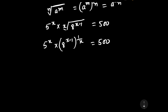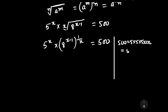Now, 500 can be written as 5 × 5 × 5 × 2 × 2, which is 5 cubed into 2 to the power 2. Therefore, we can write: 5 to the power x into 8 to the power (x minus 1) upon x is equal to 5 cubed into 2 squared.